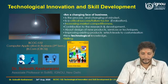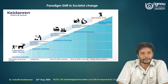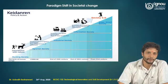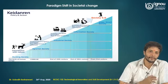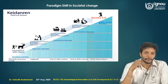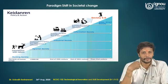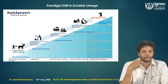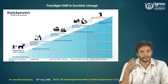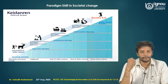If you talk about this particular theme, it revolves around technological innovation and skill development. There has been a paradigm shift in societal change — we started with the hunting society, then agrarian society, then industrial society, then information society, and finally the smart society. We have moved from Industry 4.0 to Society 5.0. Industry 4.0 talks about work-from-home culture and learning at your doorstep, while Society 5.0 is a purely smart society, more hybrid in nature.